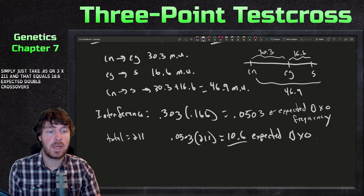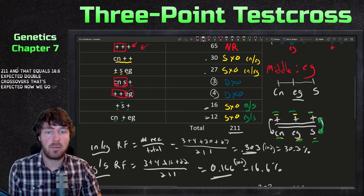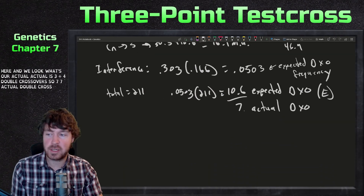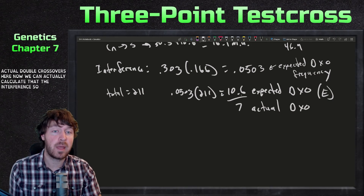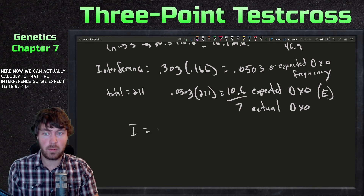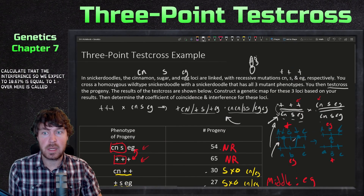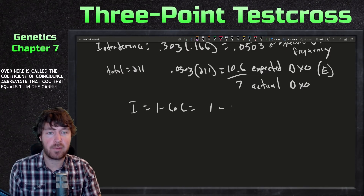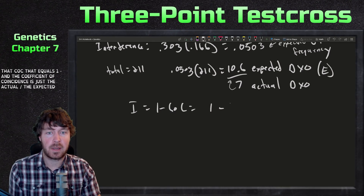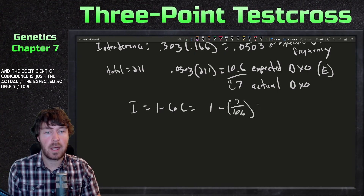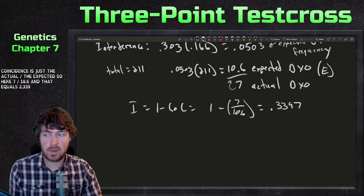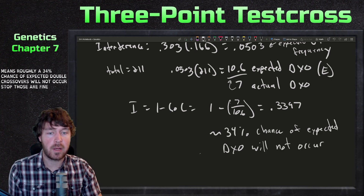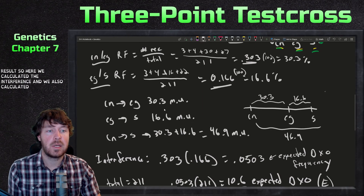Our actual double crossovers from the data are 3 + 4 = 7. The coefficient of coincidence (CoC) = actual / expected = 7 / 10.6. Interference = 1 − CoC = 1 − 0.6604 = 0.3397, roughly 34%. This means about 34% of expected double crossovers did not actually occur due to interference.